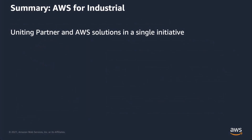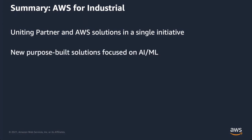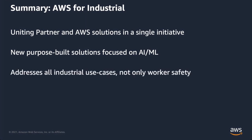AWS for Industrial unites both partner and AWS solutions into a single initiative, focused around AI and machine learning approaches. It covers all the key needs customers have asked for from an industrial IoT perspective. And it's not just suitable for greenfield environments — if you already have an existing environment, you can overlay AWS for Industrial on top of it and get better insight and inference overall.